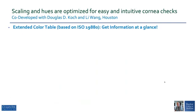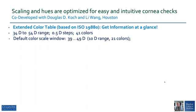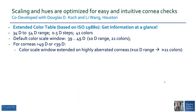We worked to develop scaling and hues that provide easy and intuitive corneal checks. We developed an extended color table based on ISO 19880 that gives us information at a glance. It has a 34 to 54 diopter range with half-diopter steps and a total of 41 colors. The default scale is 39 to 49, a 10-diopter range giving 21 colors. For corneas with powers greater than 49 or less than 39, the color scale window is extended beyond the standard 21 colors. Green is always 44 diopters and always displayed in order to orient the clinician.